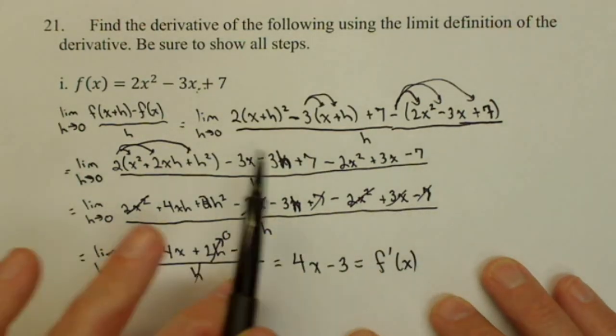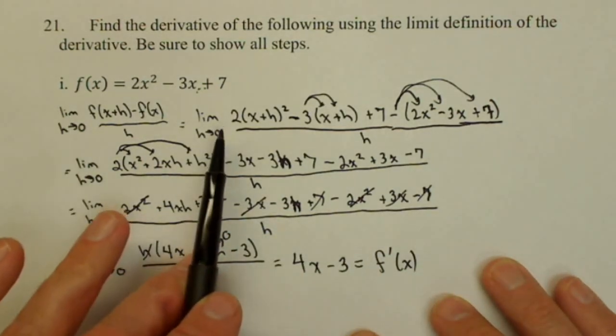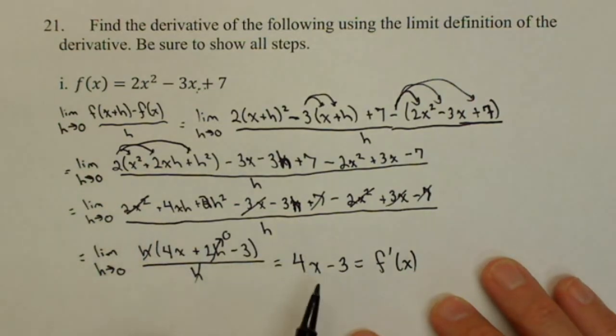So don't forget your notation. Notice we had to write limit as h goes to 0 out in front until we actually took the limit, and then I no longer write it.